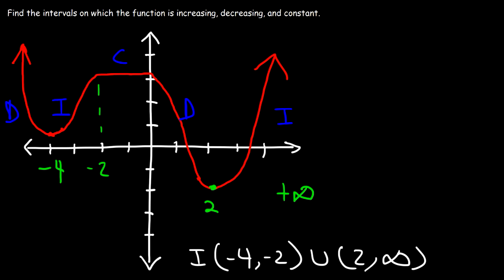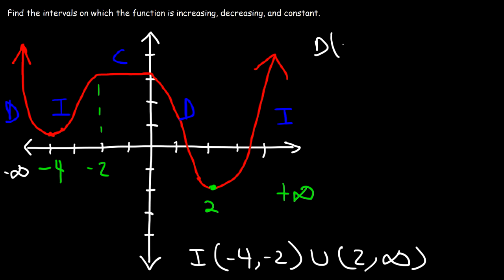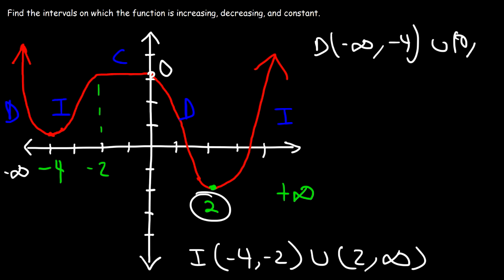Now when is the function decreasing? It's decreasing all the way to the left starting from negative infinity, and it stops decreasing at negative 4. Then it starts decreasing again around x equals 0 to 2. And it's constant only from negative 2 to 0.